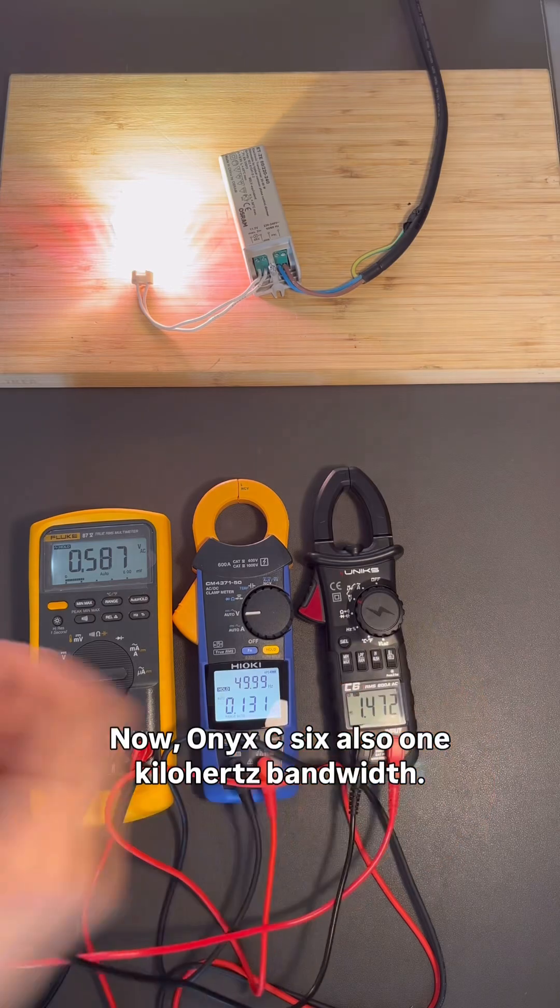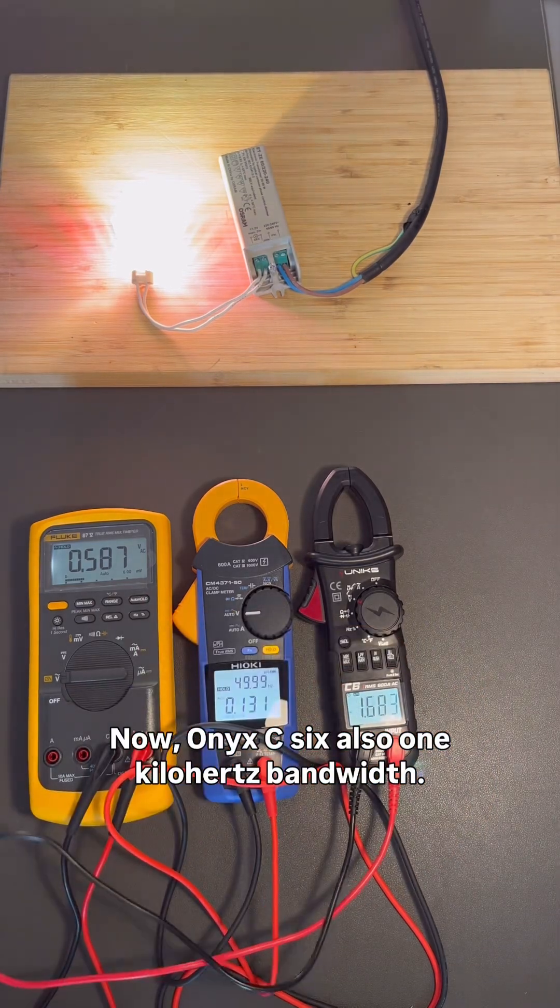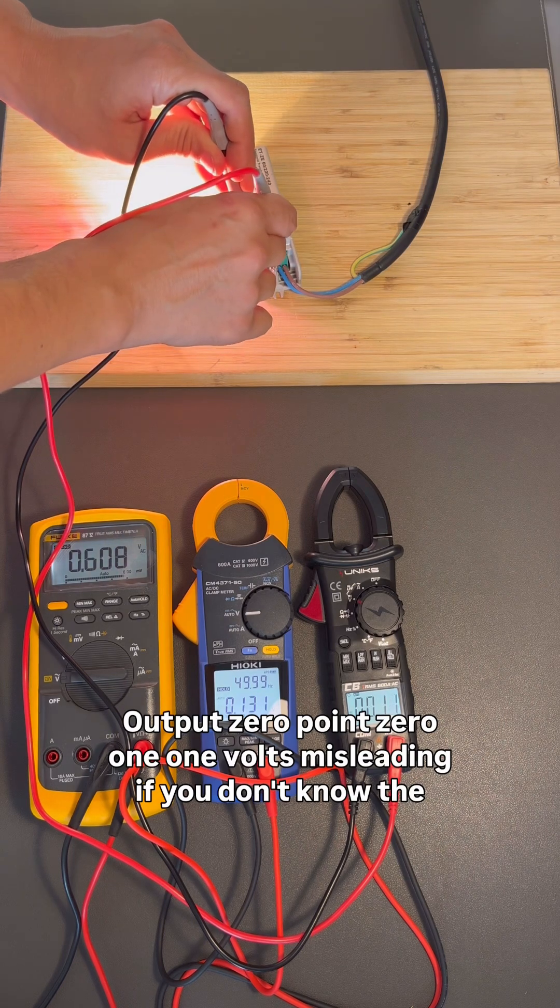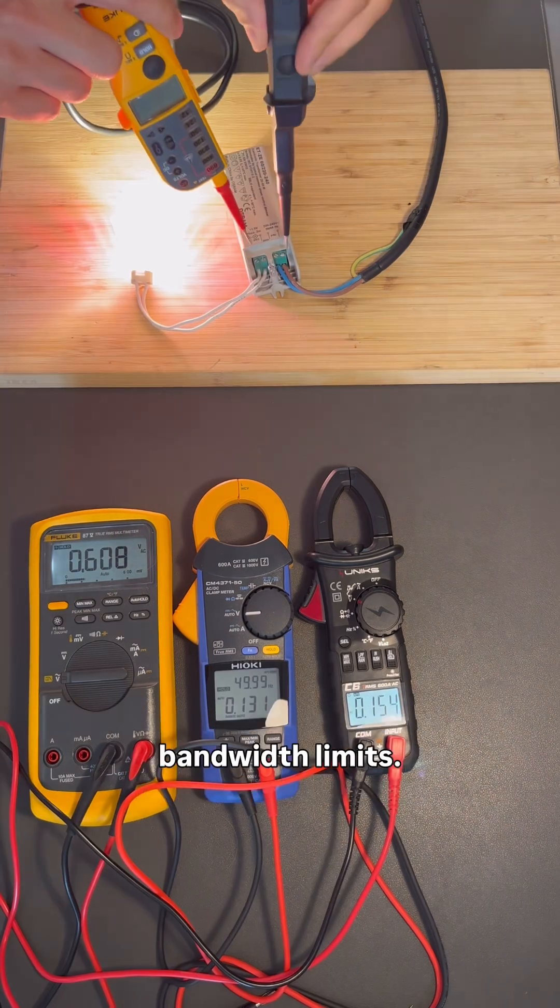Now, Onyx C6, also 1kHz bandwidth. Input, OK. Output, 0.011V. Misleading if you don't know the bandwidth limits.